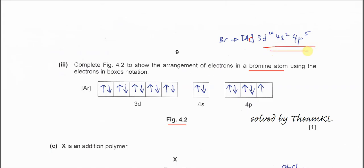For 3d10, the 3d orbital is fully filled, so you put 10 electrons in there. Make sure each of the orbitals or boxes has two electrons pointing in different directions. This represents 3d10.